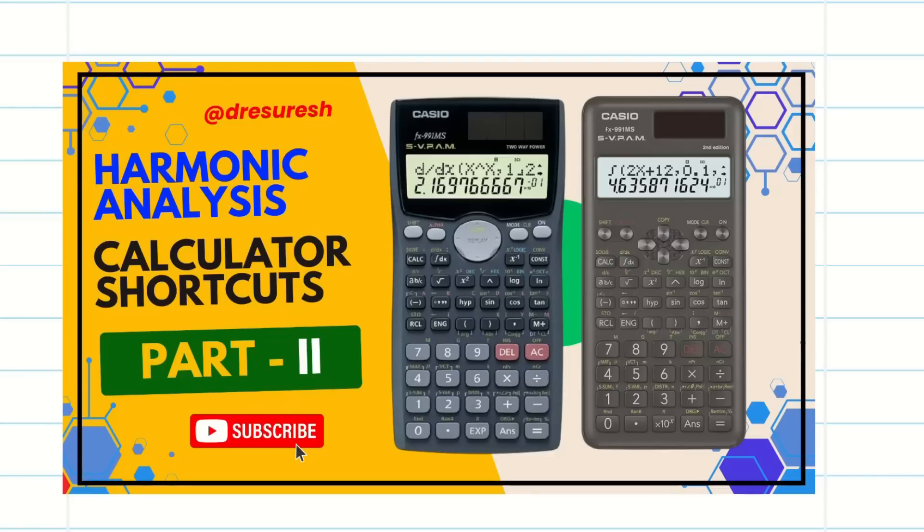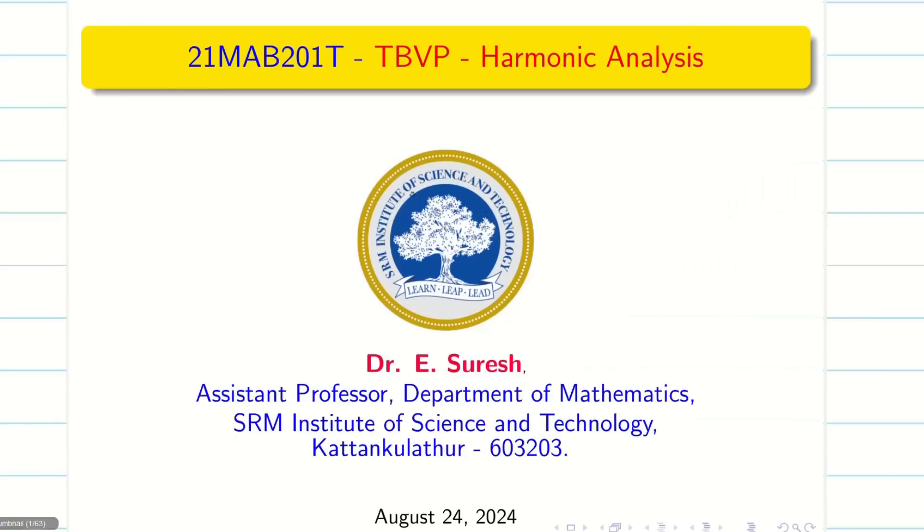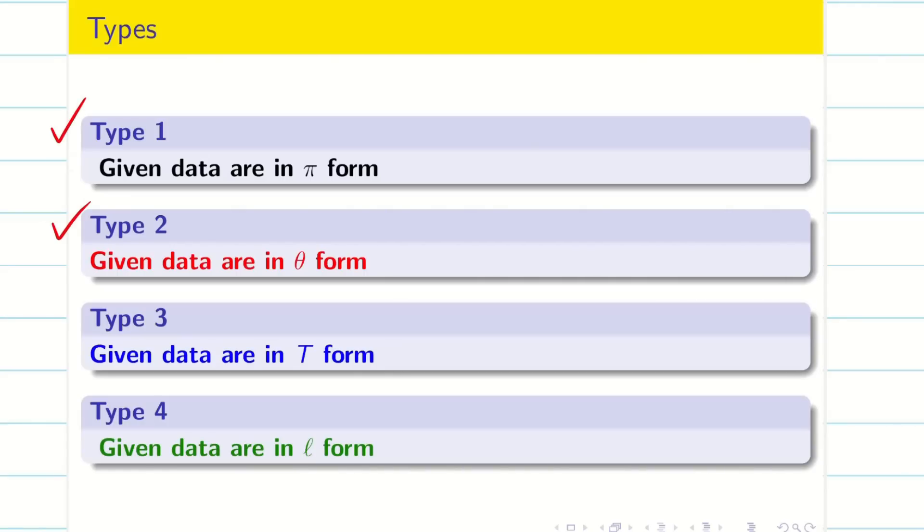Dear students, welcome to harmonic analysis session 2. In the previous lecture we dealt with two methods: type 1, the pi form in radian, and type 2 dealing with theta in degree mode. Those who haven't watched the previous video lecture, go to the description to find the link, watch part 1 and come back here. Type 1 and type 2 were already completed in lecture 1. Now we're going to see when the problem is of t form and L form.